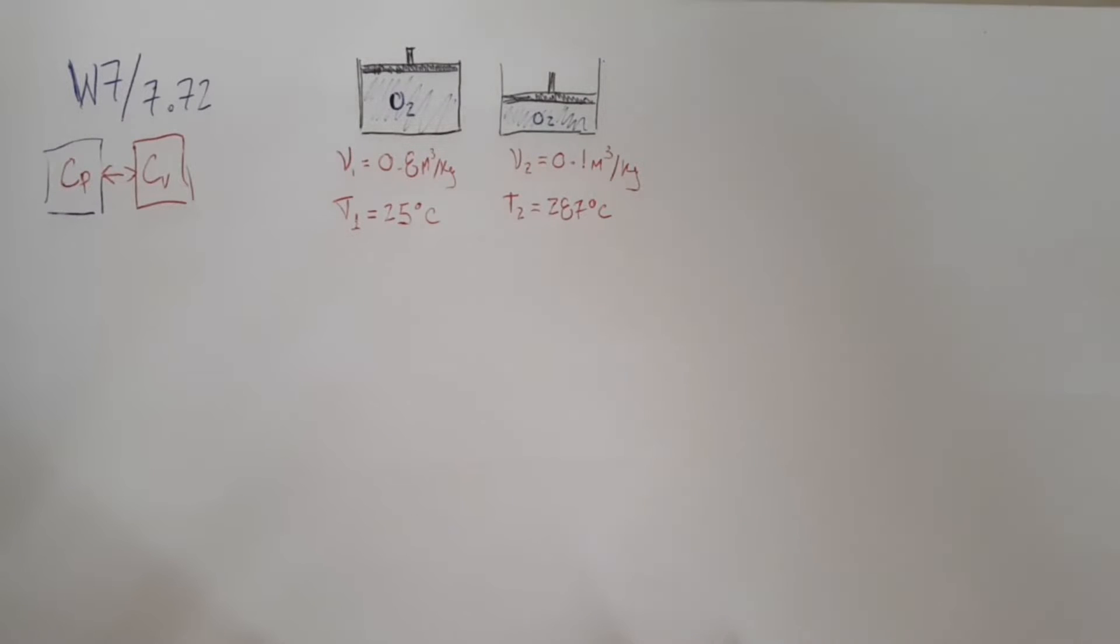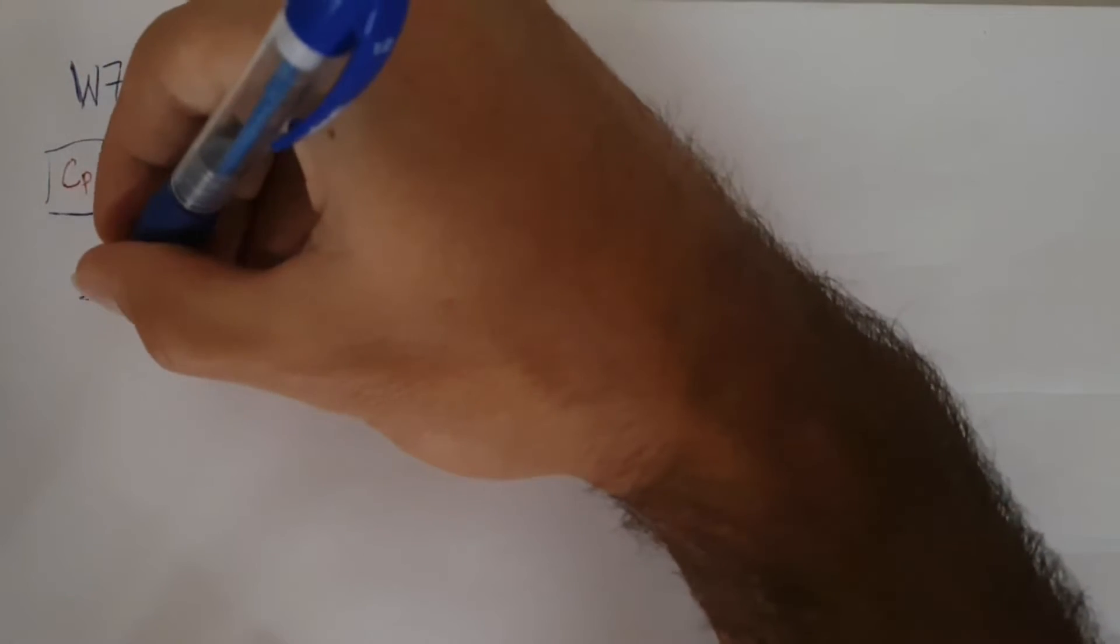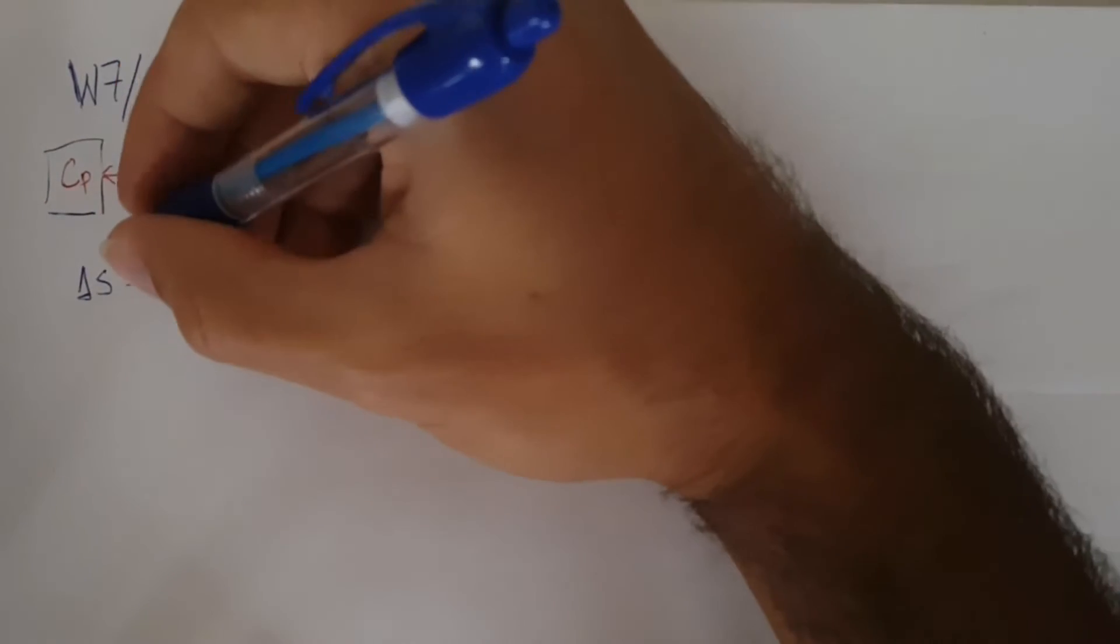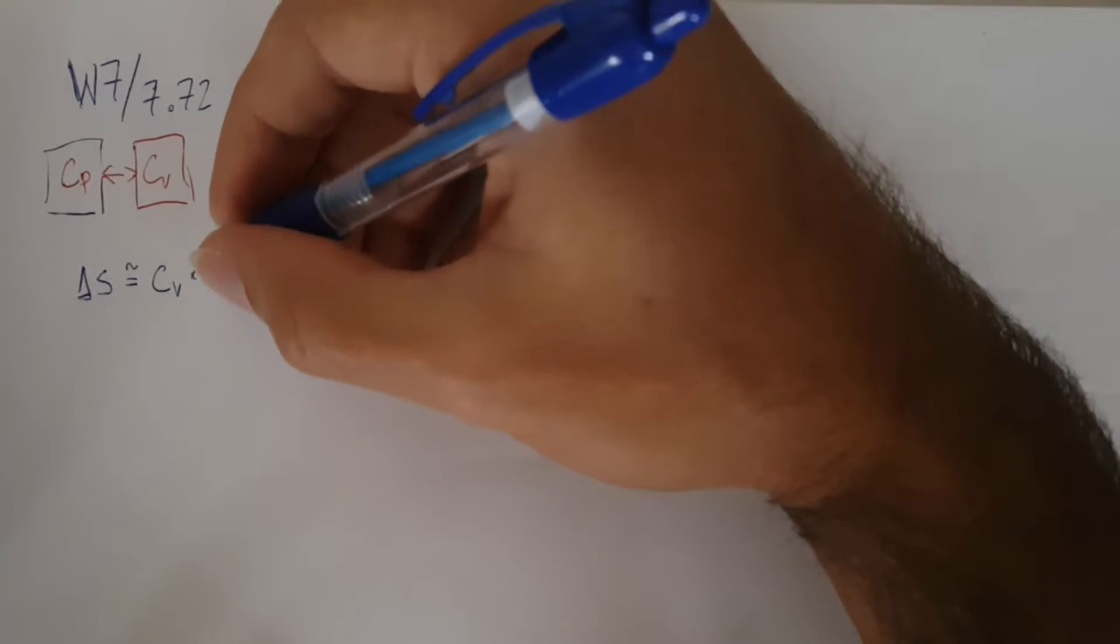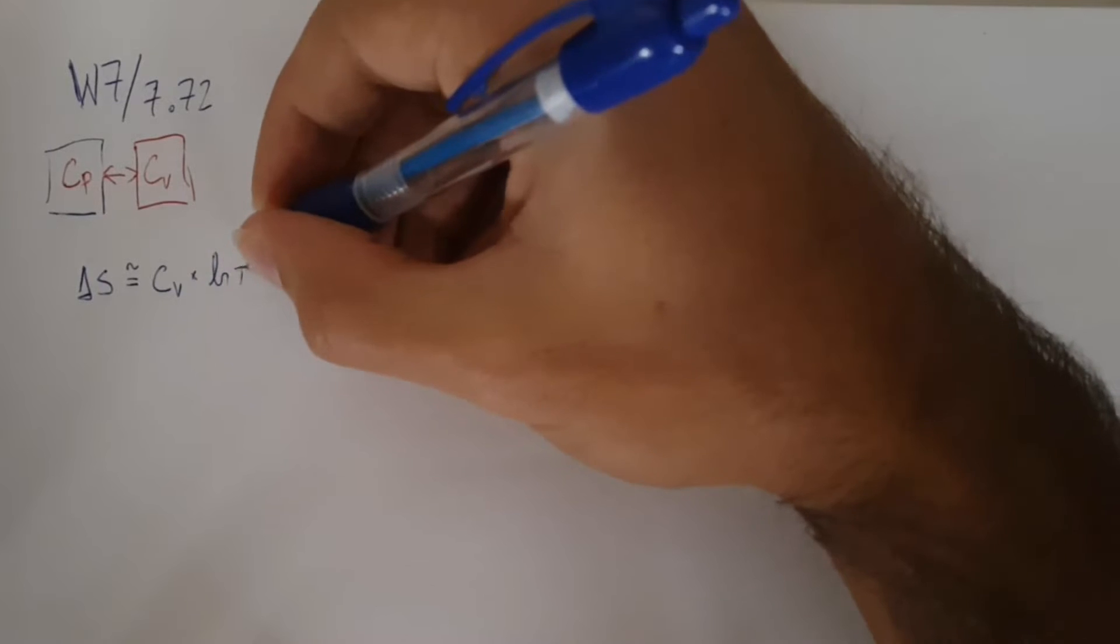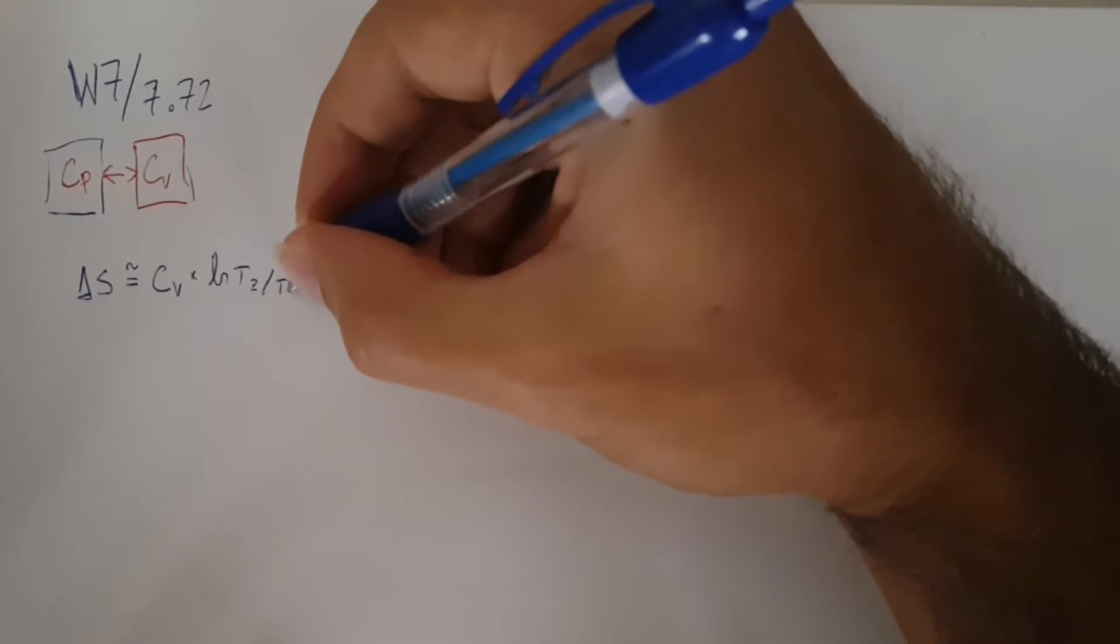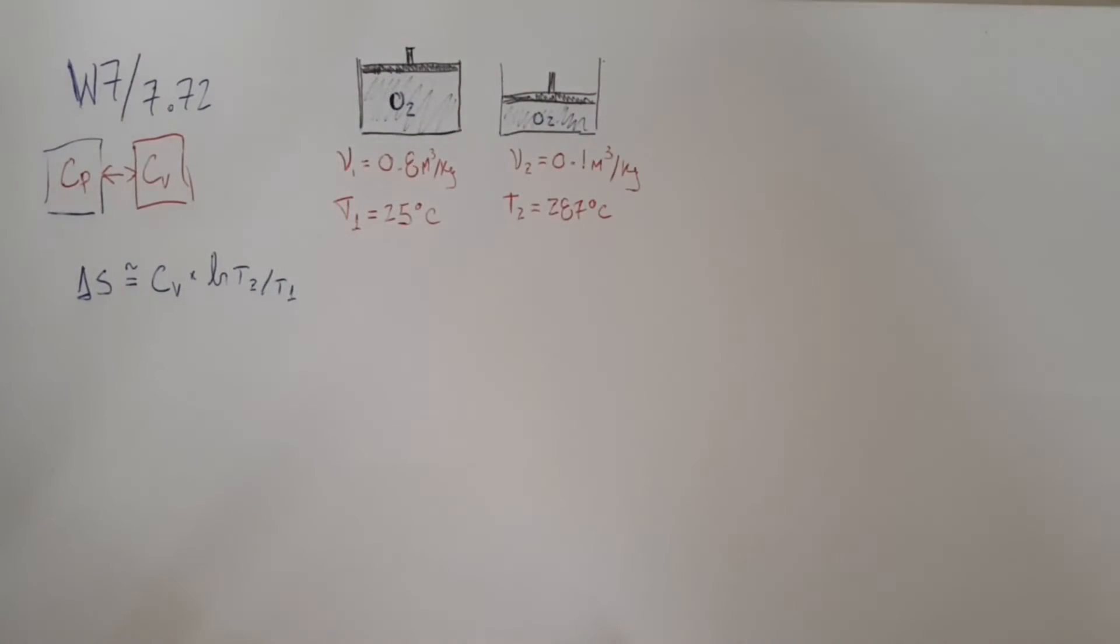All we need to do is apply the correct equation for the difference in entropy. If we have a solid, which is not our case, the difference in entropy can be approximated to CV times the natural log of the final temperature over the initial temperature. This is CV average, and this is only valid for solids.